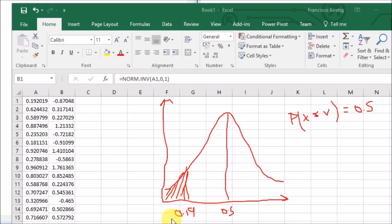So the value, you can see it here, is minus 0.87, which makes sense obviously because 0.19 is smaller than 0.5.